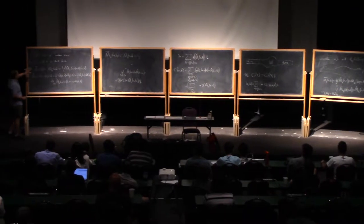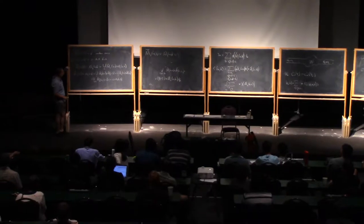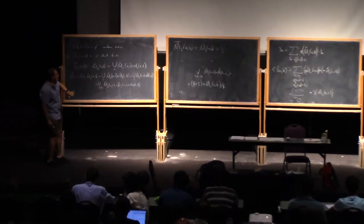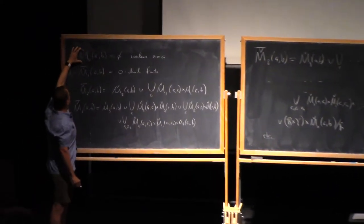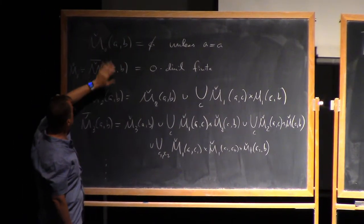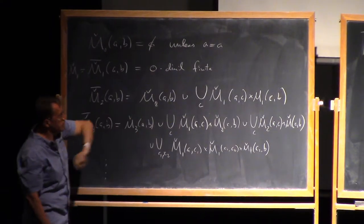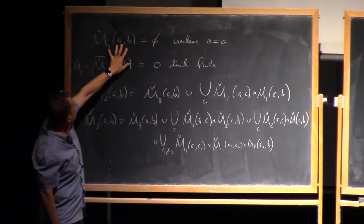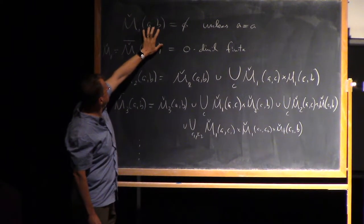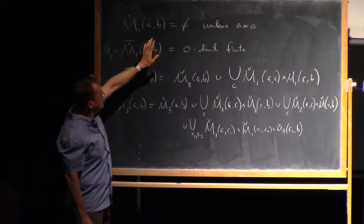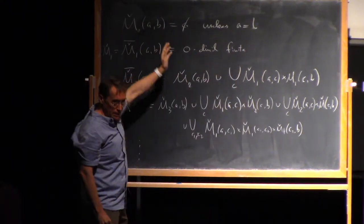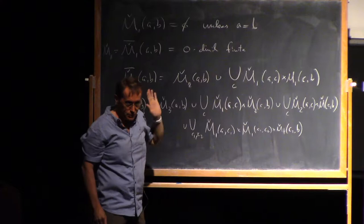Last time, we discussed the compactification of the moduli space on a cylinder Y times R. Just to recap that briefly, I've indexed the moduli spaces between a pair of critical points by the dimension. I should really keep track of the homotopy class of path between them, but for simplicity... So if I look at a zero-dimensional moduli space between A and B, it's empty, except if A equals B. Then there's just a constant trajectory between them.